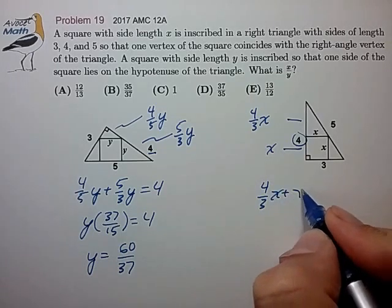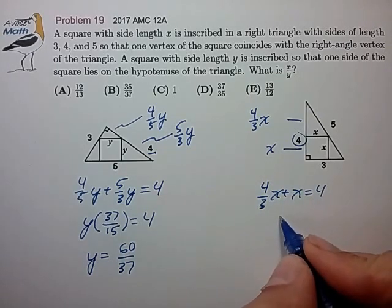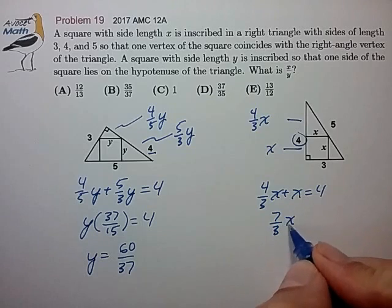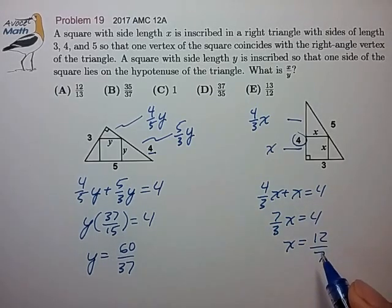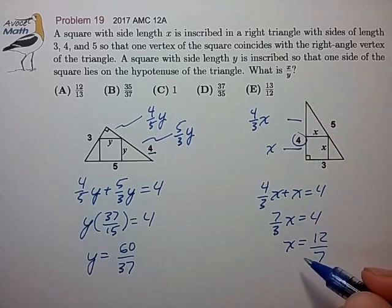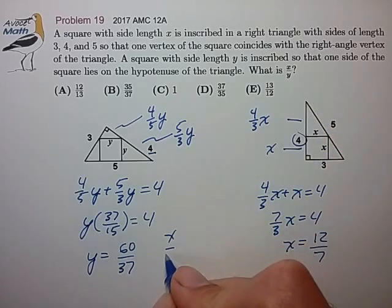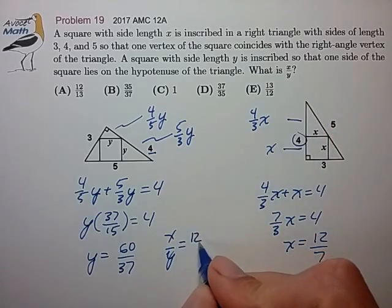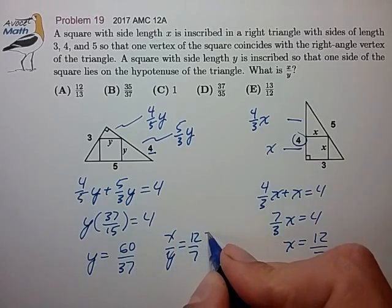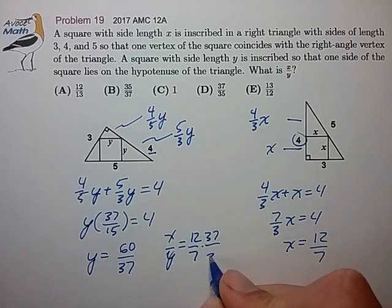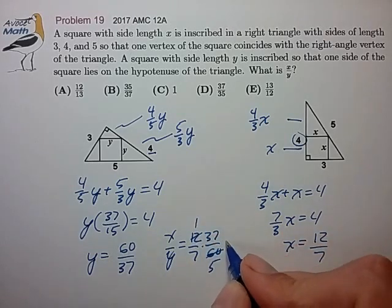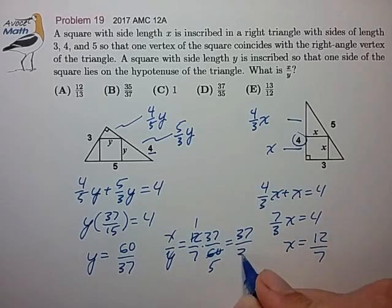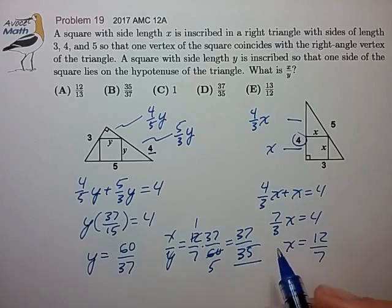And in the right case, we're looking for the ratio x to y. So x to y is 12 over 7. Flip this one, 37 over 60. That's a 5, that's a 1, 37 over 5. That's choice D.